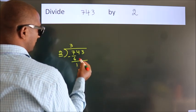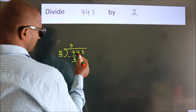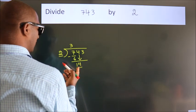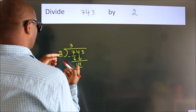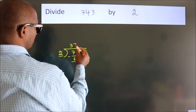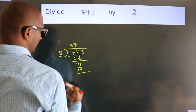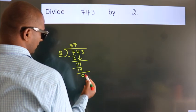After this, bring down the beside number. So 4 down. So 14. When do we get 14 in the 2 table? 2 times 7 is 14. Now we subtract. We get 0.